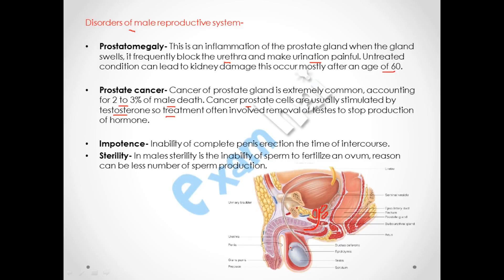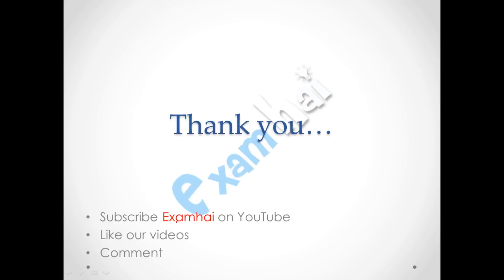The next disorder is impotence, which is the inability to complete a penile erection at the time of intercourse. The last is sterility in males, which is the inability to produce sperm capable of fertilizing an ovum. The reason is usually a low sperm count, generally less than 20 million per ml of semen.